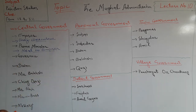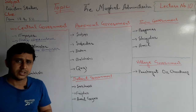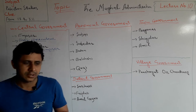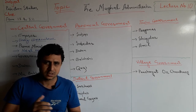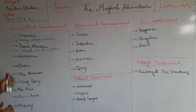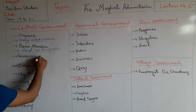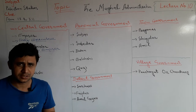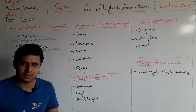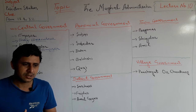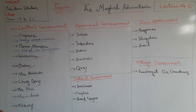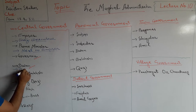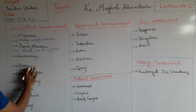The Governor was a military officer and head of a province — a Suba was under a Governor. The Divan was the head of civil administration at the central level and was also the Finance Minister at the central level.